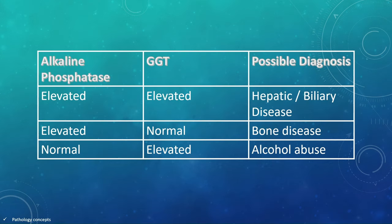This table shows differential diagnosis according to the elevation of ALP and GGT. If ALP and GGT are both elevated, then the possible diagnosis is hepatic or biliary disease. If ALP is elevated and GGT is normal, then it suggests bone disease. And if ALP is normal and GGT is elevated, it suggests alcohol abuse.